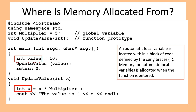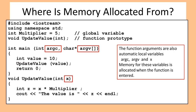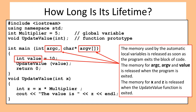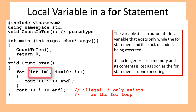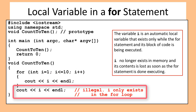Memory for automatic local variables is allocated when the function is entered. The function arguments — argc, argv, and x — are also automatic local variables, and memory for them is allocated when the function is entered. The memory used by automatic local variables is released as soon as the program exits the block of code. The variable i is an automatic local variable that exists only while the for statement is executing; its contents are lost as soon as the for loop finishes.